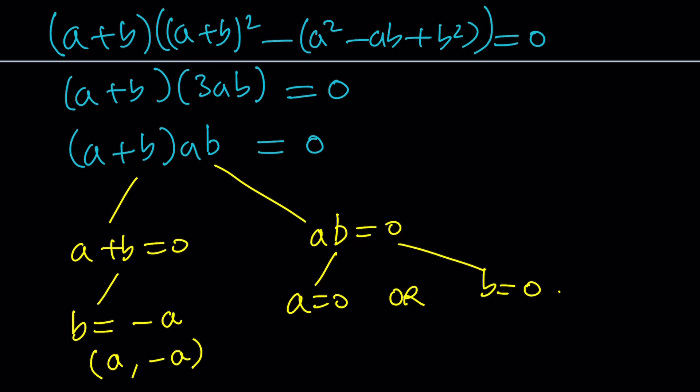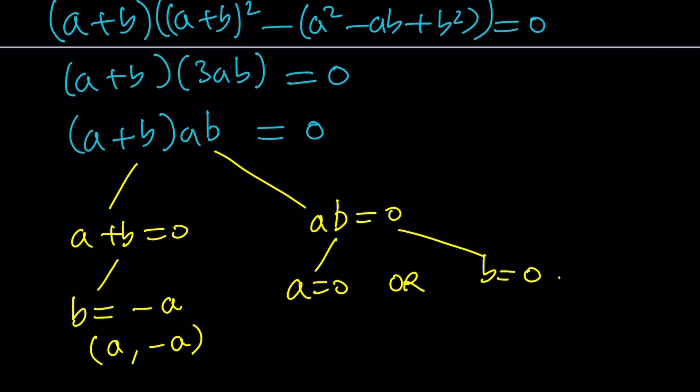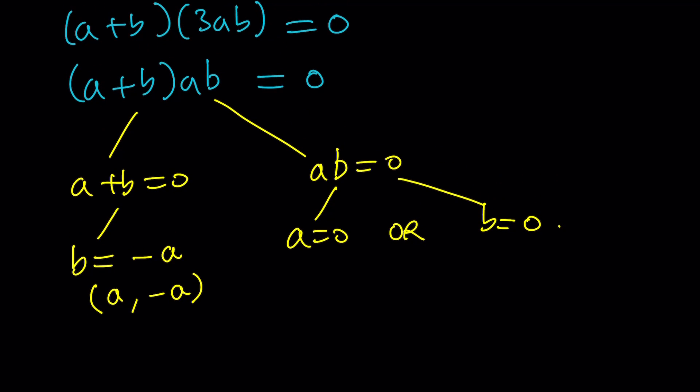So we get these solutions. And obviously, there are infinitely many solutions because when a is 0, b can be anything. So you can have 0 comma b as a general solution, or you can have a comma 0. So you can basically write all these solutions as ordered pairs in terms of one of the variables.